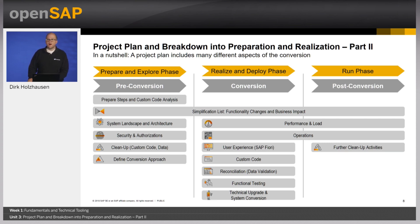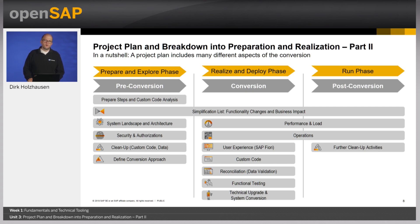During the realize and deploy phase, the required recommended actions from the Simplification List must be worked on. Additional topics to consider in the project plan include: performance and load tests, user experience and Fiori-related activities, adaptation of custom code to make it S4HANA and HANA ready, data validation and reconciliation activities, testing in general, and operational aspects for handing over S4HANA operations after go-live. After go-live, during the run phase, post-conversion activities can be addressed. Some changes from the Simplification List can be done during the run phase, along with continued cleanup activities.